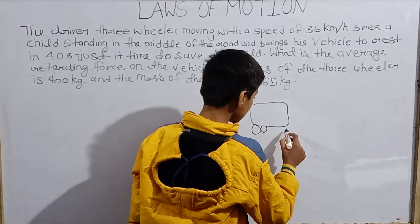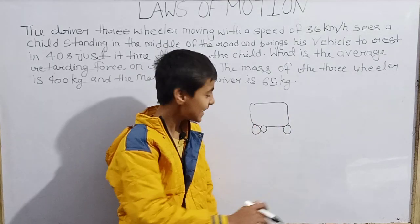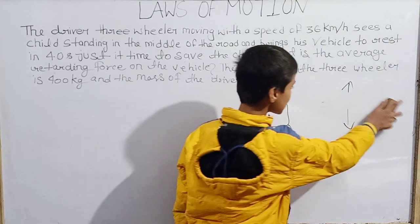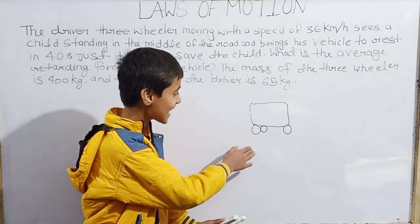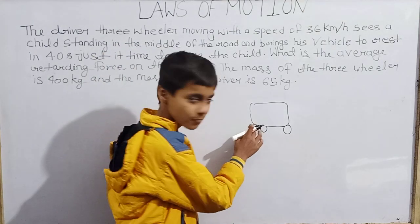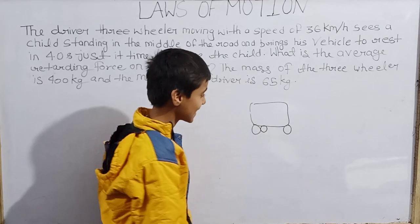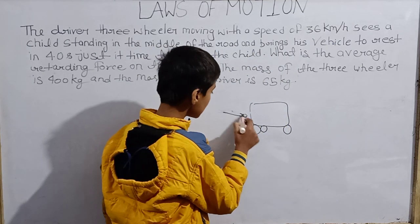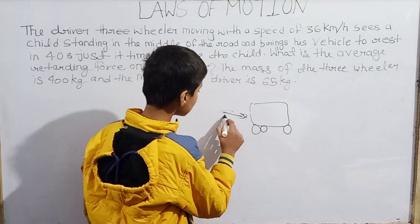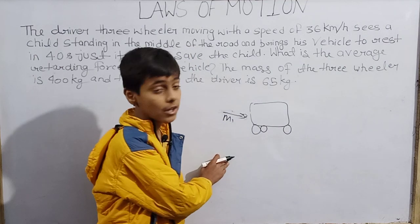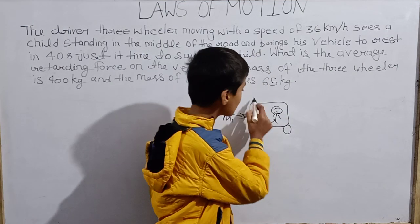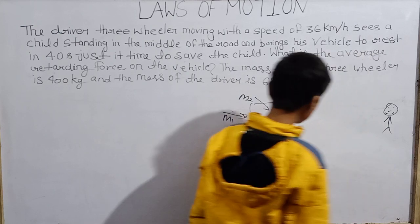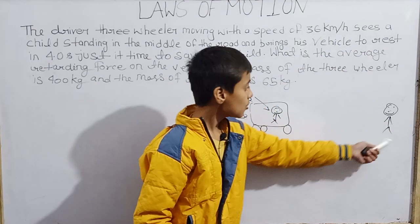First we have to assume something. I have a three-wheeler here — one wheel here, one wheel here, one here. The board is two-dimensional with x and y axes, and I am trying to represent it in three dimensions. So this is the front wheel and this is the side of the wheel. I take the mass of the three-wheeler as M1 and the driver sitting here has mass M2. The values are given.